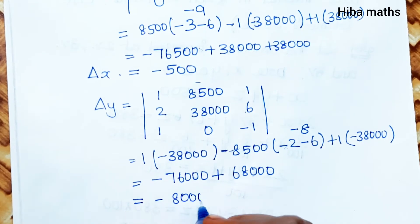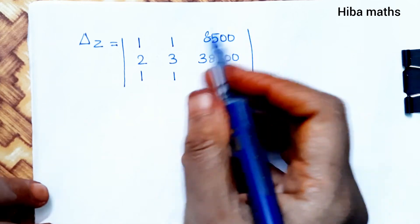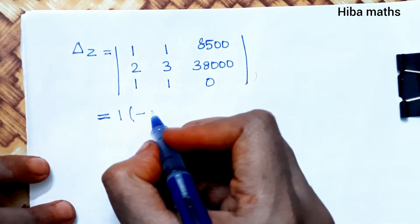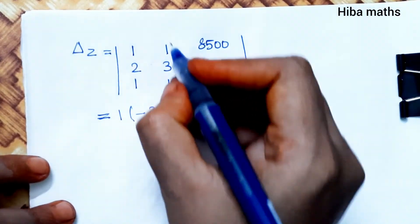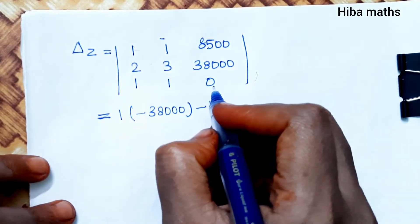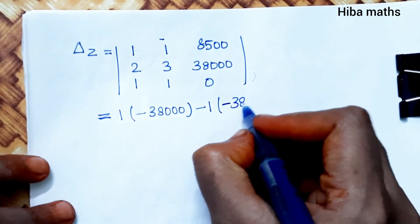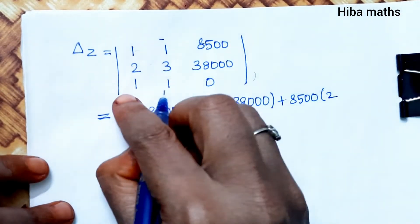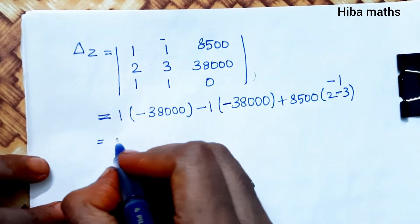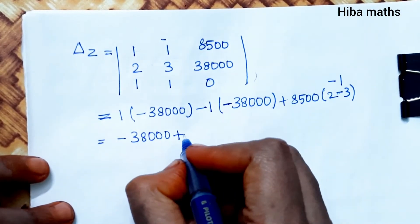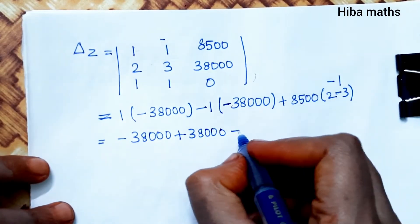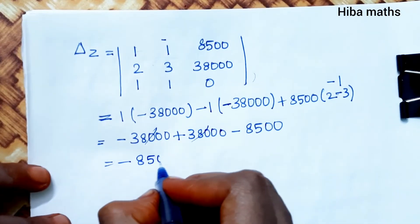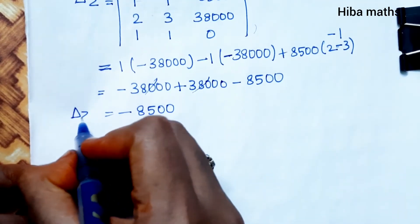For Δz, we replace the third column with constants 8500, 38000, 0. After expanding the cofactors along the first row: 1 times (38000×1 − 0) minus 1 times (2×0 − 38000×1) plus 8500 times (2×1 − 3×1). The terms 38000 and −38000 cancel, leaving Δz equals −8500.